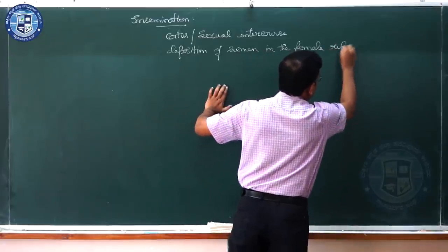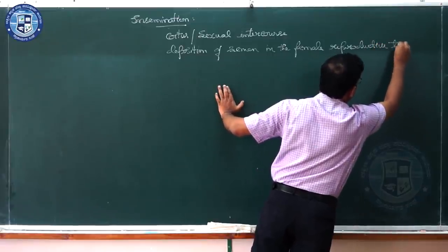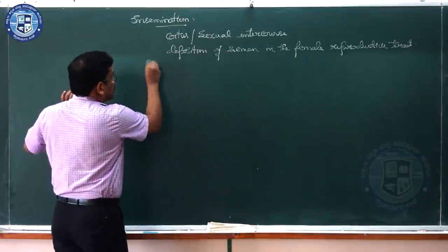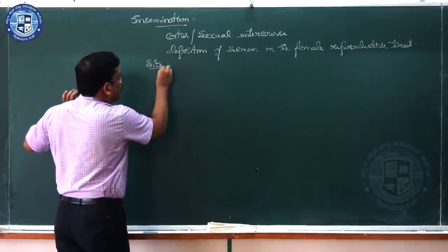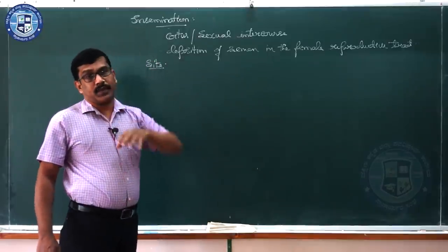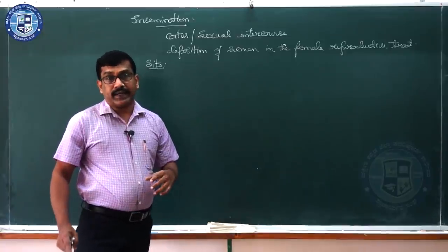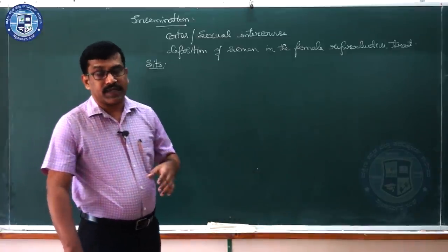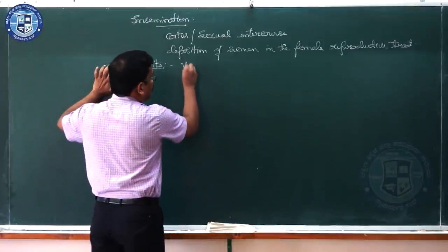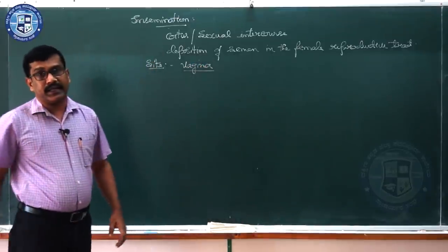For a one-mark question, insemination is defined as the process of deposition of semen in the female reproductive tract. The site of natural insemination is the vagina. There is also an artificial insemination concept which will be studied in detail in the fourth chapter on reproductive health.